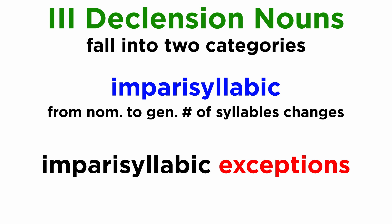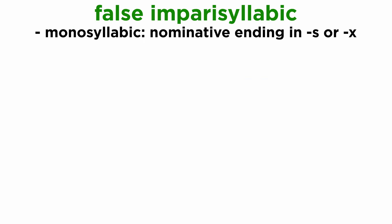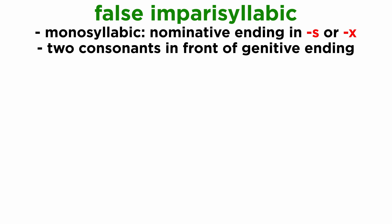These were all regular nouns, but there are exceptions of course, which can make things a bit more complicated. There are imparasyllabic nouns which will have a genitive plural ending in -ium instead of -um, and we will need to remember them. Some of these are monosyllabic words with a nominative ending in s or x, with two consonants in front of the genitive ending.